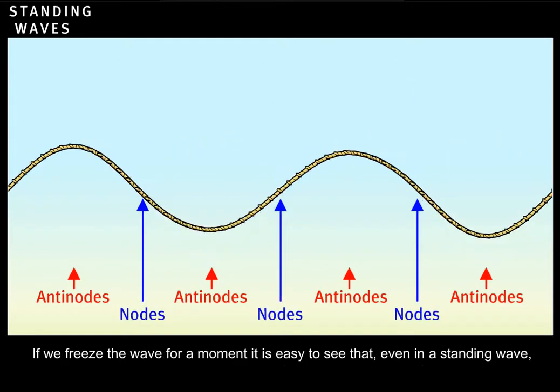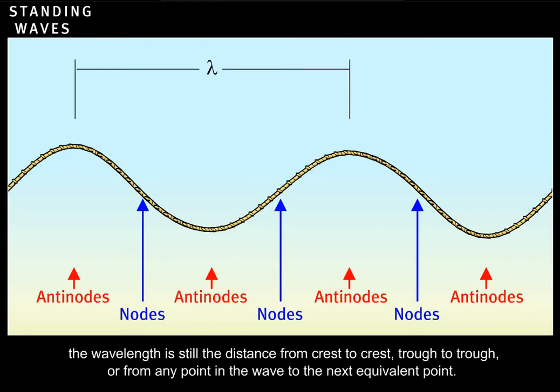If we freeze the wave for a moment, it is easy to see that even in a standing wave, the wavelength is still the distance from crest to crest, trough to trough, or from any point in the wave to the next equivalent point.